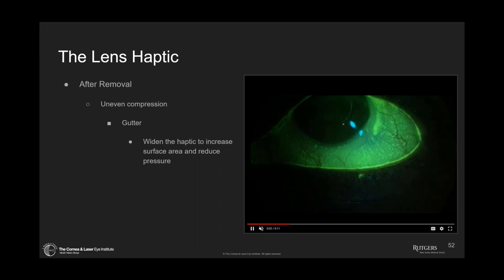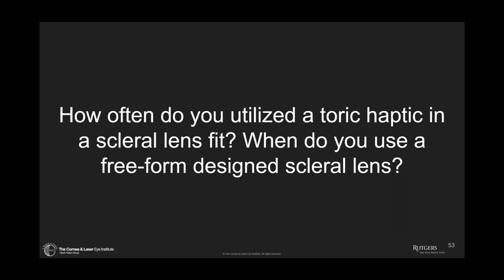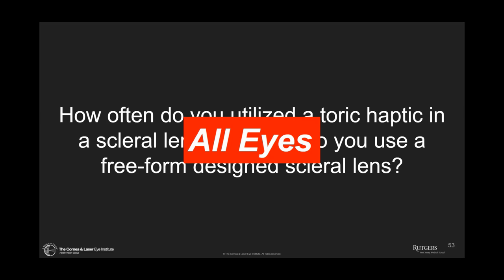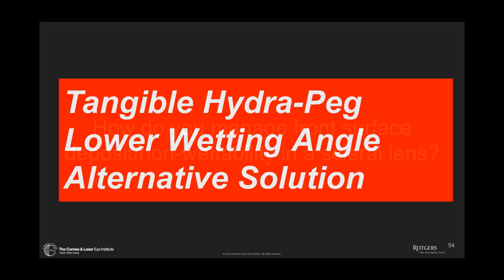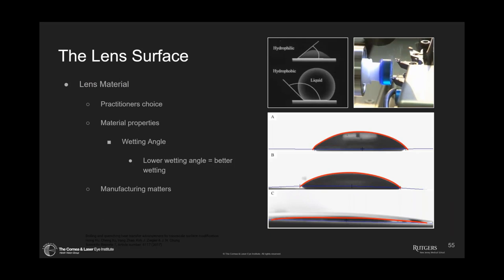How often do I utilize a toric haptic in a scleral lens fit, and when do I use free-form lens designs? Literally every single eye. There has not been an eye that I have fit since 2016 or 2017 that I haven't used at least a toric haptic, and up from there to a free-form design. How do I manage front surface deposits and non-wettability in scleral lenses? I use tangible Hydra-PEG, I use lens material with a lower wetting angle, and I'll use alternative solutions.